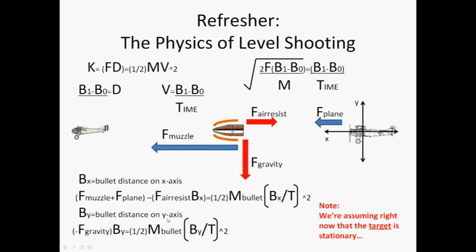Now, in the y direction, force of gravity is a constant. It's always pulling down at 9.81 meters per second. So, the kinetic energy of the bullet is equal to the force of gravity times the distance gravity's pulled the bullet.